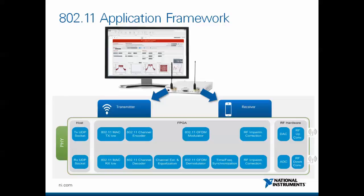The received data can also be provided via UDP. As you can see here on the top, the host also displays various status information like the received spectrum, the received constellation, and the received throughput.